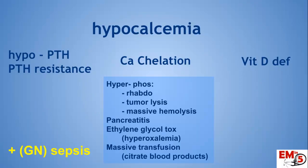What are the causes of hypocalcemia? You can split this into a couple of categories. You have the parathyroid causes — hypoparathyroidism and parathyroid hormone resistance. You have vitamin D deficiencies. And then we have calcium chelation, which is probably what we need to think about most in the acute ER setting. This includes hyperphosphatemia chelating out calcium — so rhabdo, tumor lysis, massive hemolysis. Also patients with pancreatitis. Think about it if they just got a massive transfusion, as there's a lot of citrate in blood products. Also in ethylene glycol toxicity, which can cause hyperoxalemia, and in sepsis — specifically gram-negative sepsis.